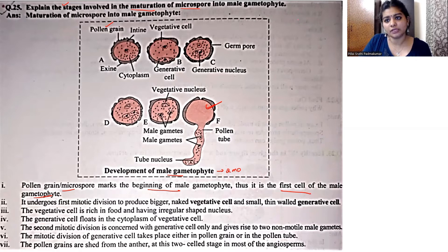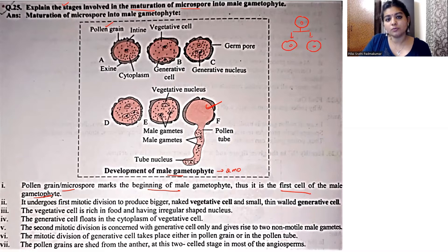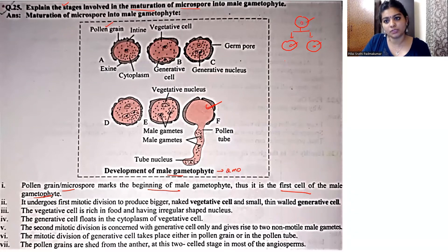In general, mitotic division में क्या होता है? जहाँ पे parent cell जो है, वो दो daughter cells में break होगा, और यहाँ पे chromosomes का जो distribution है, वो equal है — जितने chromosomes parent cell के पास हैं, उतने ही chromosomes daughter cells के पास भी होते हैं, इसलिए इस division को हम equational division भी कहते हैं.